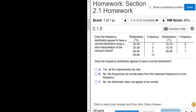Does the frequency distribution appear to have a normal distribution using a strict interpretation of the relevant criteria? Okay, so a distribution is said to be normal if the frequencies start small, get big, and get small again. So I'm going to write some stuff down over here. Also, it's supposed to be approximately symmetric.